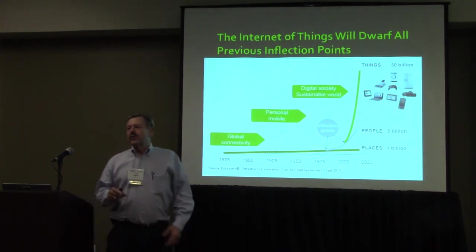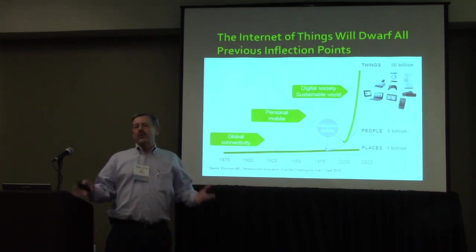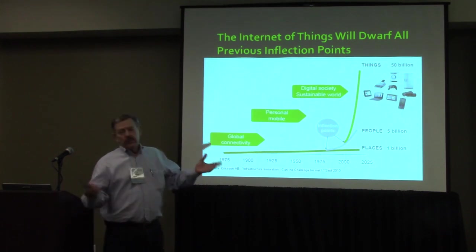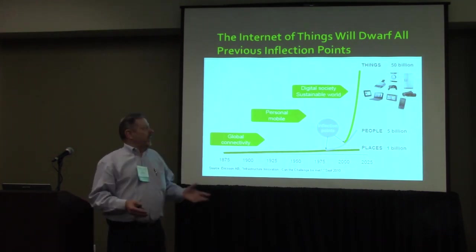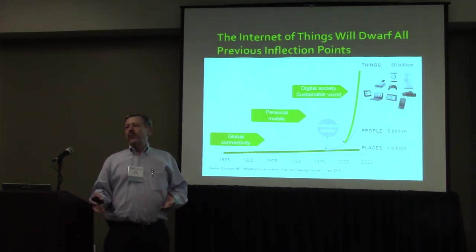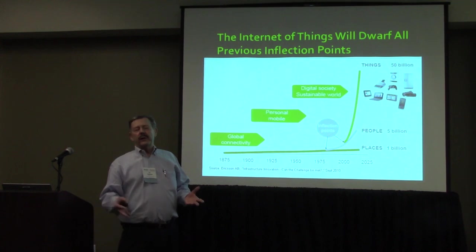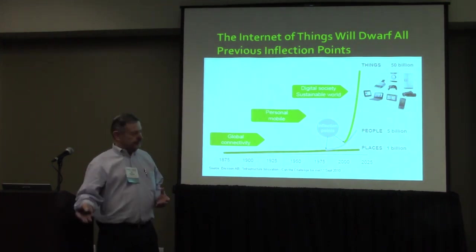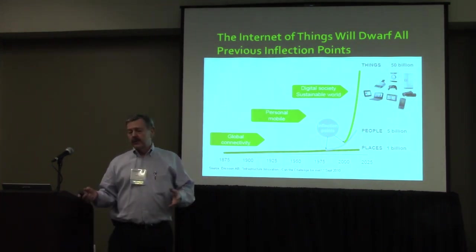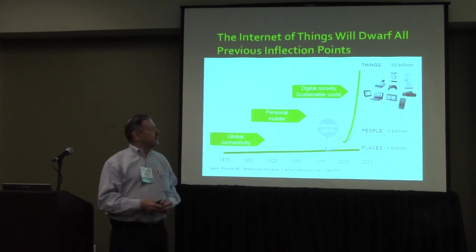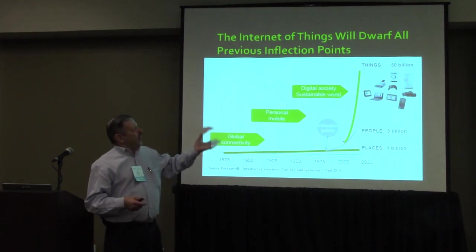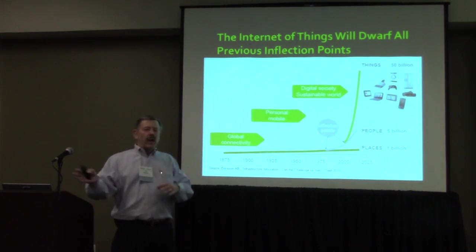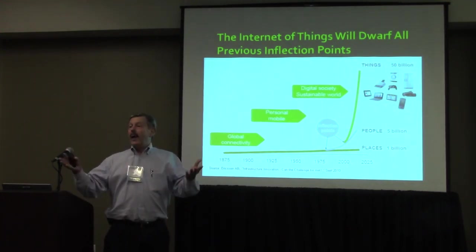The Internet of Things is going to dwarf all of those inflection points. In three to five years we're going to have 50 billion devices. We have 8.4 billion devices, according to Gartner, right now connected to the Internet as IoT devices. We'll have 50 billion before long — there's a dispute as to when it will happen, but it will.